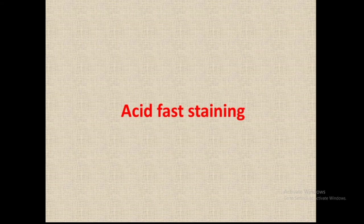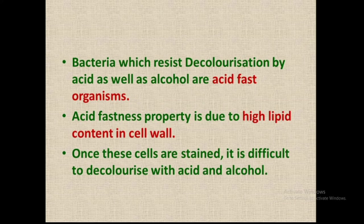The next type is acid fast staining. Acid fast organisms are those which resist decolorization by acid as well as alcohol. Why do these bacteria have acid fastness? Because they contain a high lipid content in the cell wall, which causes them to resist decolorization. These bacteria are also not easily stained.